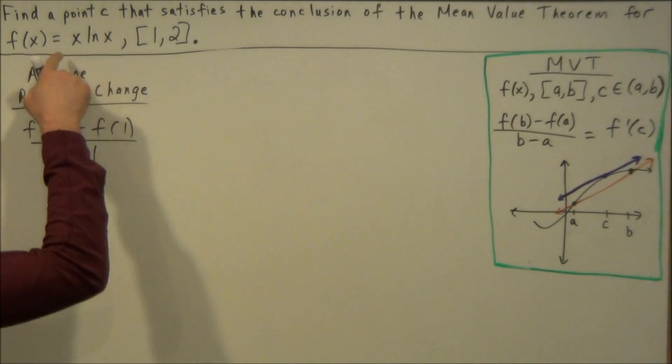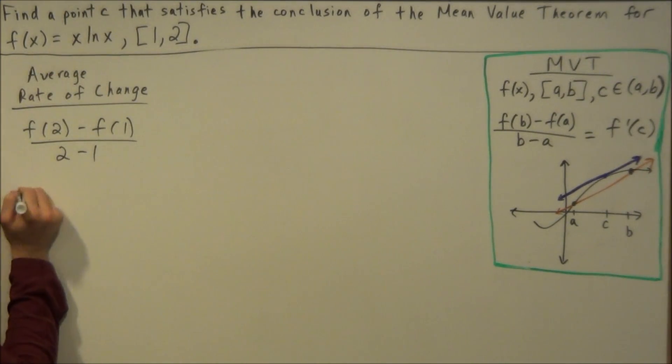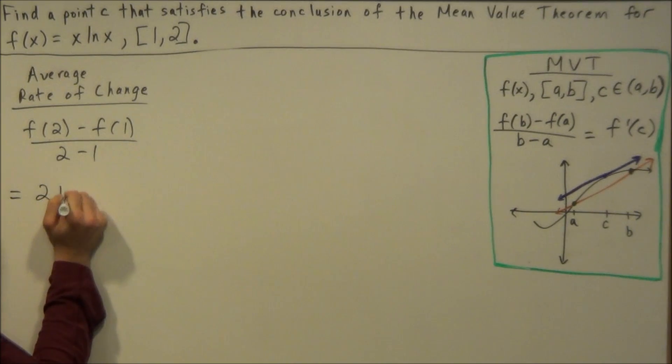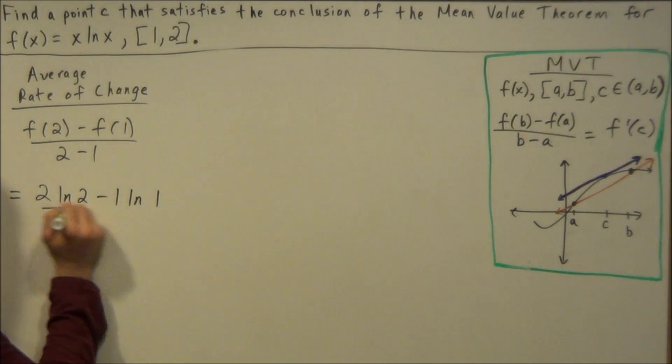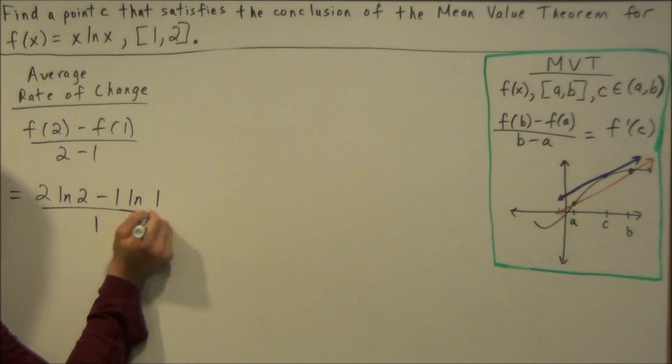To find f(2), we just plug into the function. So for the next line, we're going to have 2 times natural log 2 minus 1 times natural log 1 over 2 minus 1, which is just equal to 1 here.